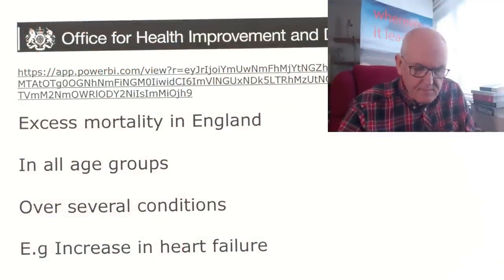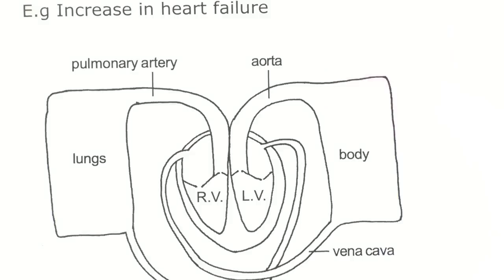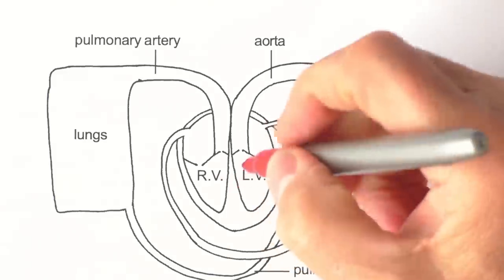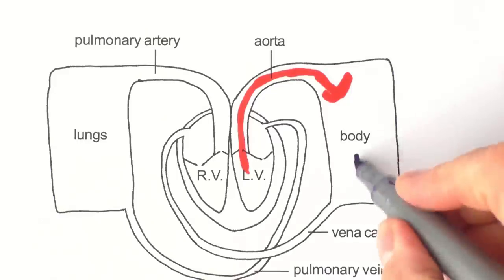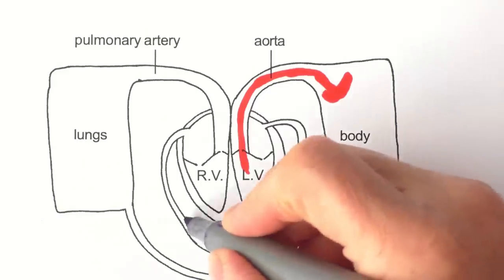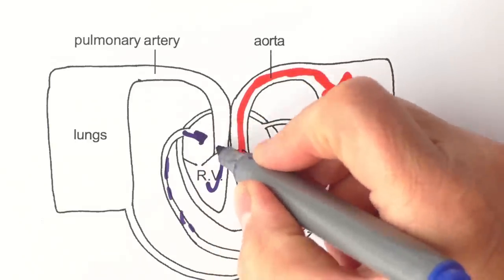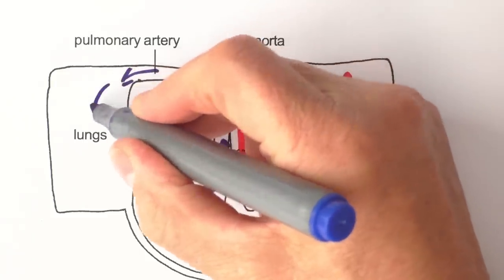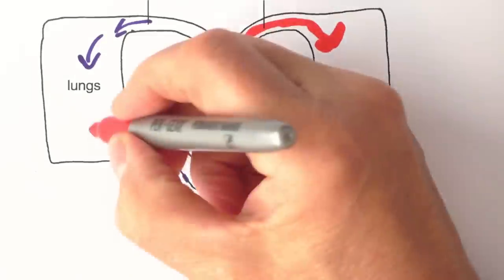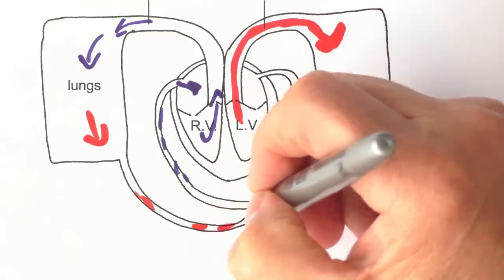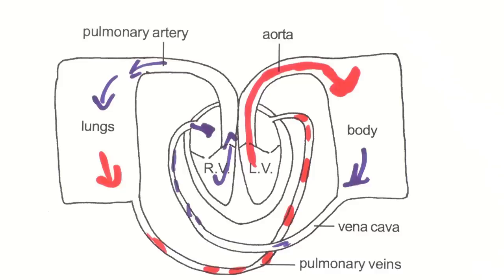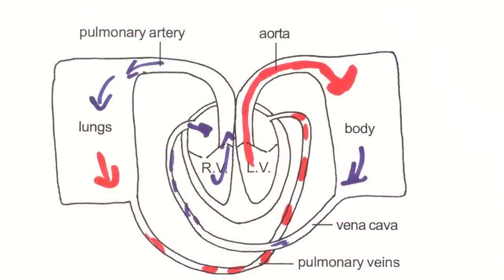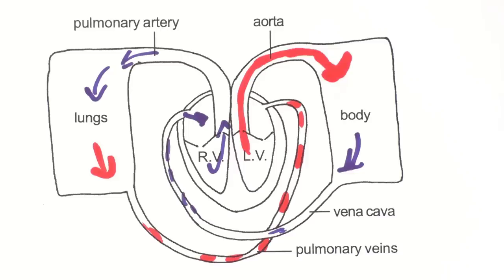Here is a diagram of the circulatory system. Oxygenated blood comes out from the left side of the heart — the left ventricle — going around the body, becoming progressively deoxygenated, then returning via the large veins back to the right side of the heart, through to the lungs. Deoxygenated blood arrives at the lungs, gets oxygenated, and goes back to the left side of the heart. In essence it is a beautifully simple system.